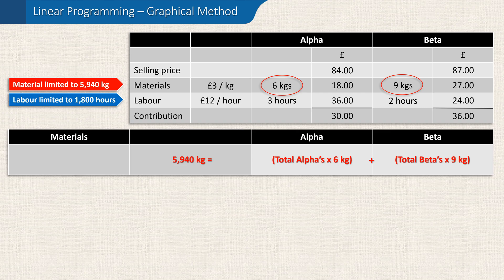We can write this in shorthand. Let's use the letter A for the number of alphas and B for the number of betas. Doing this, we end up with the formula: 6A + 9B = 5,940 kilograms.